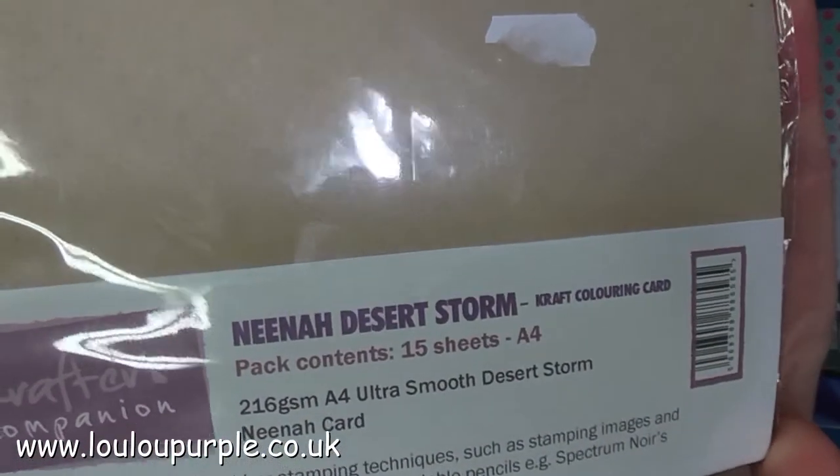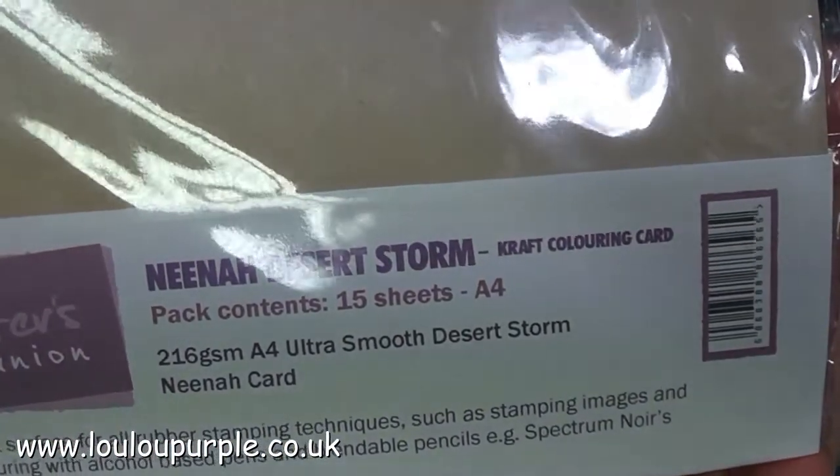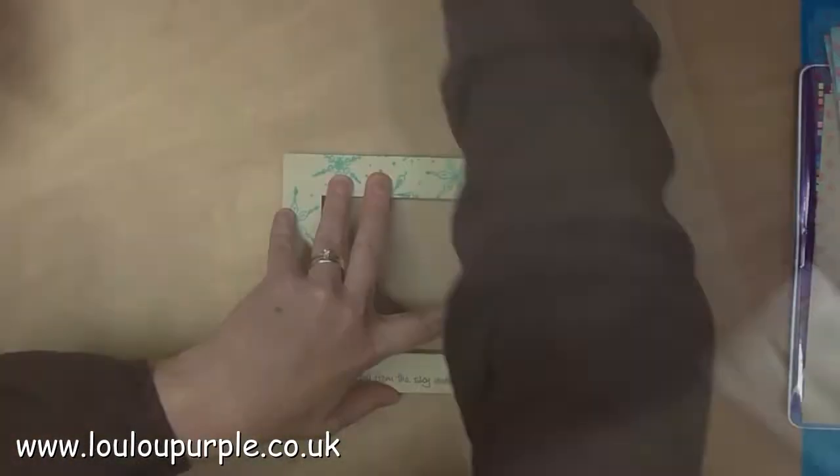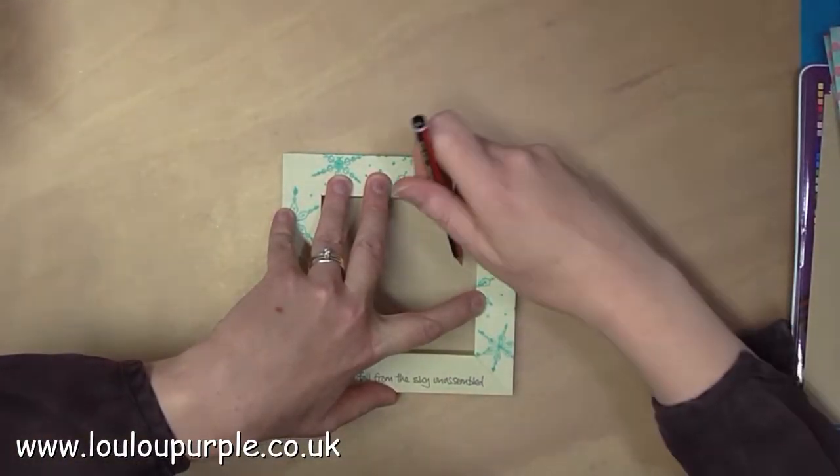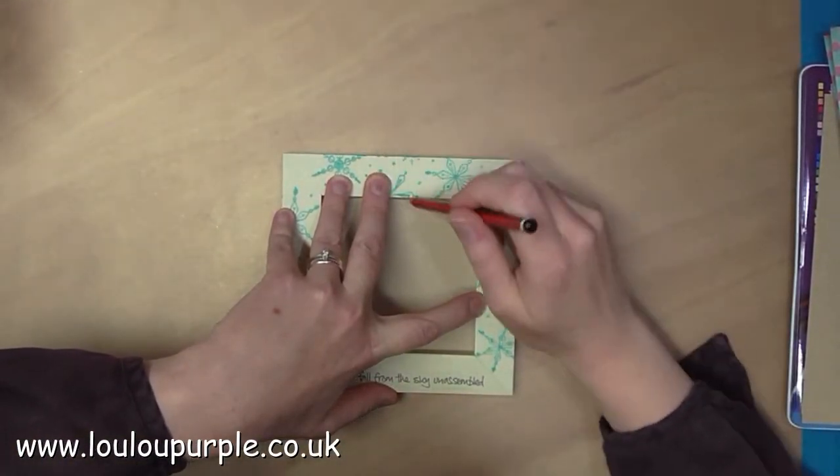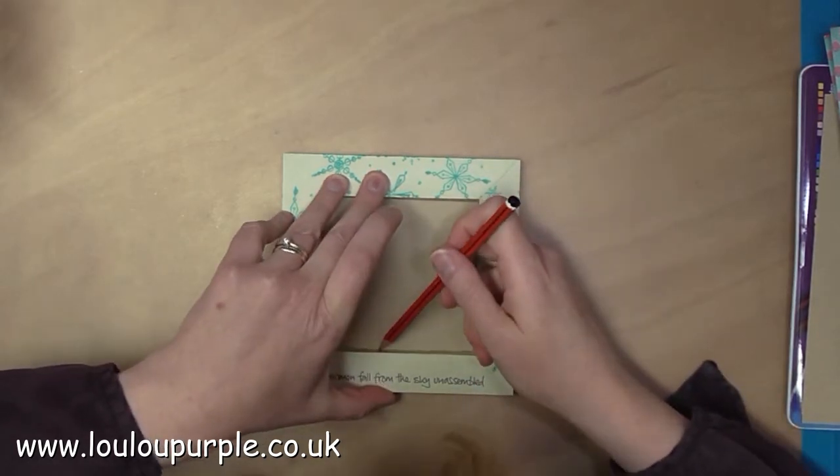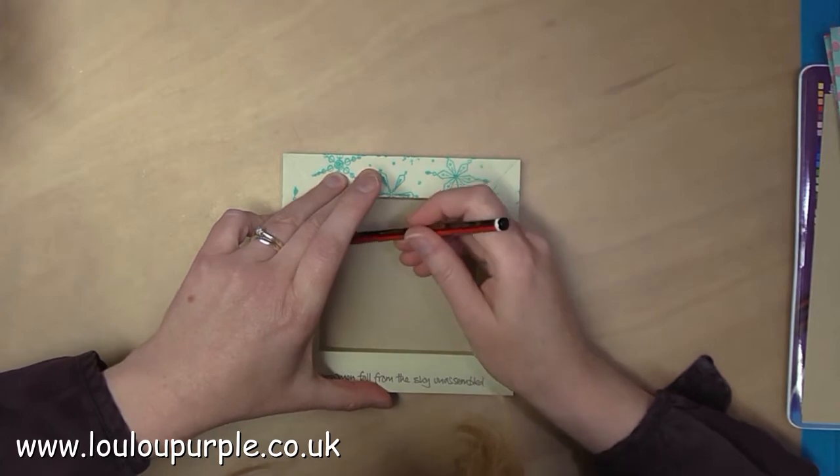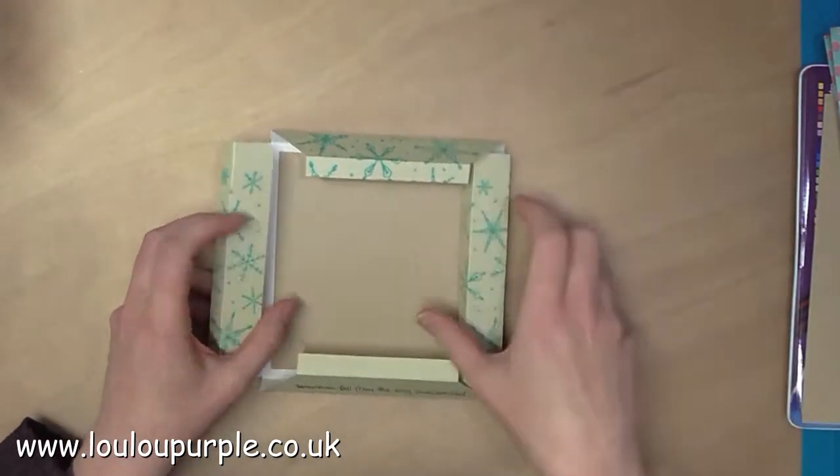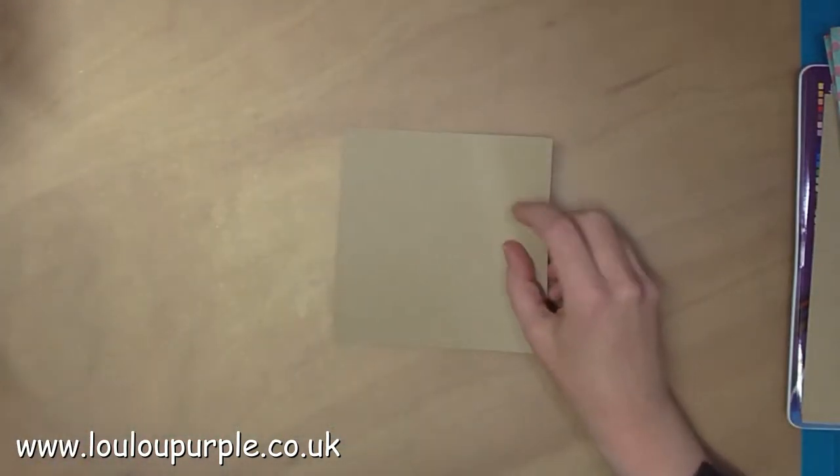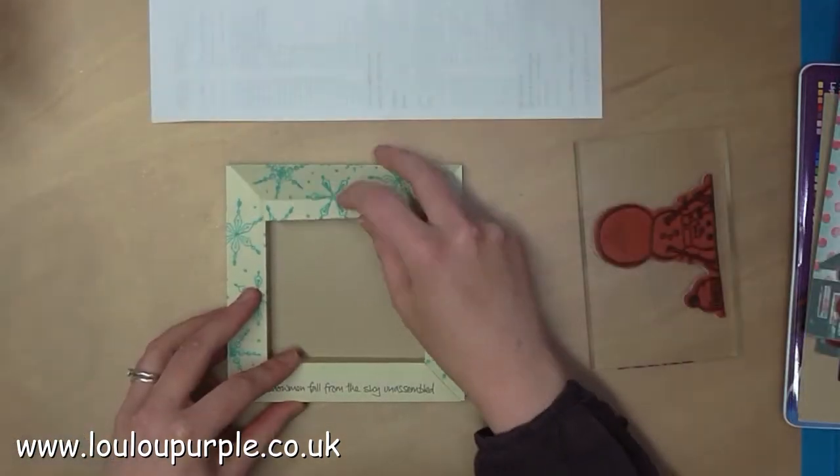I am now going to be using the Neenah Desert Storm craft coloring card from Crafters Companion. This is specially for alcohol markers and pencil coloring. Here I am just marking around the outside edge of my card so that I can see where I need to do my image for the middle.